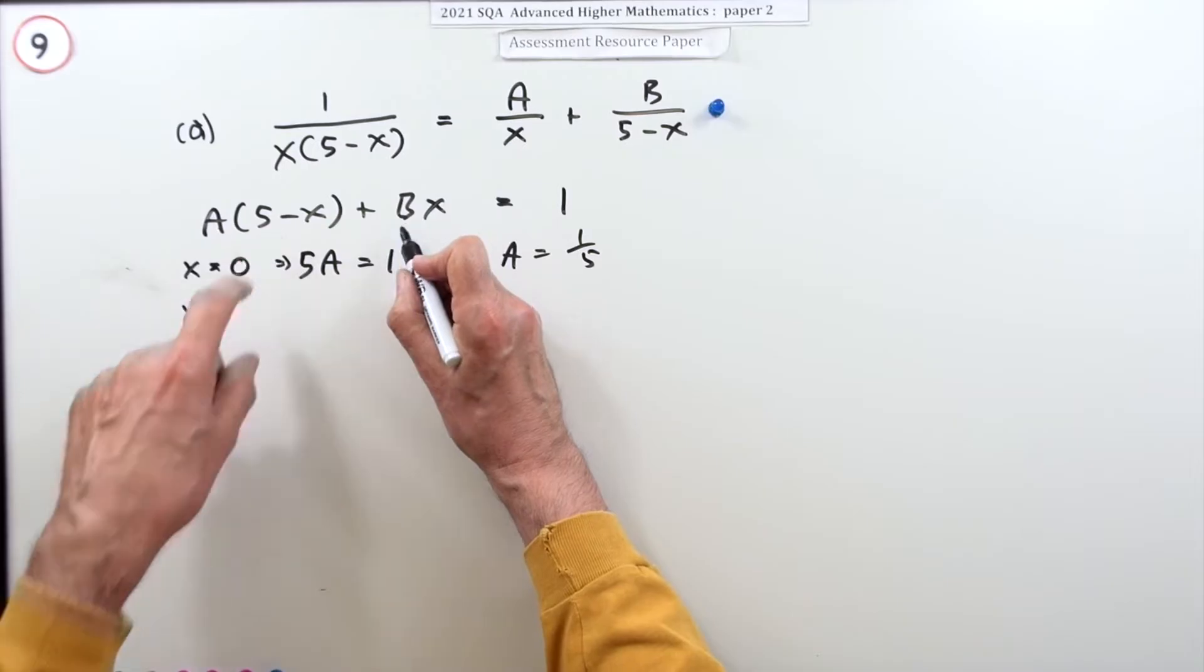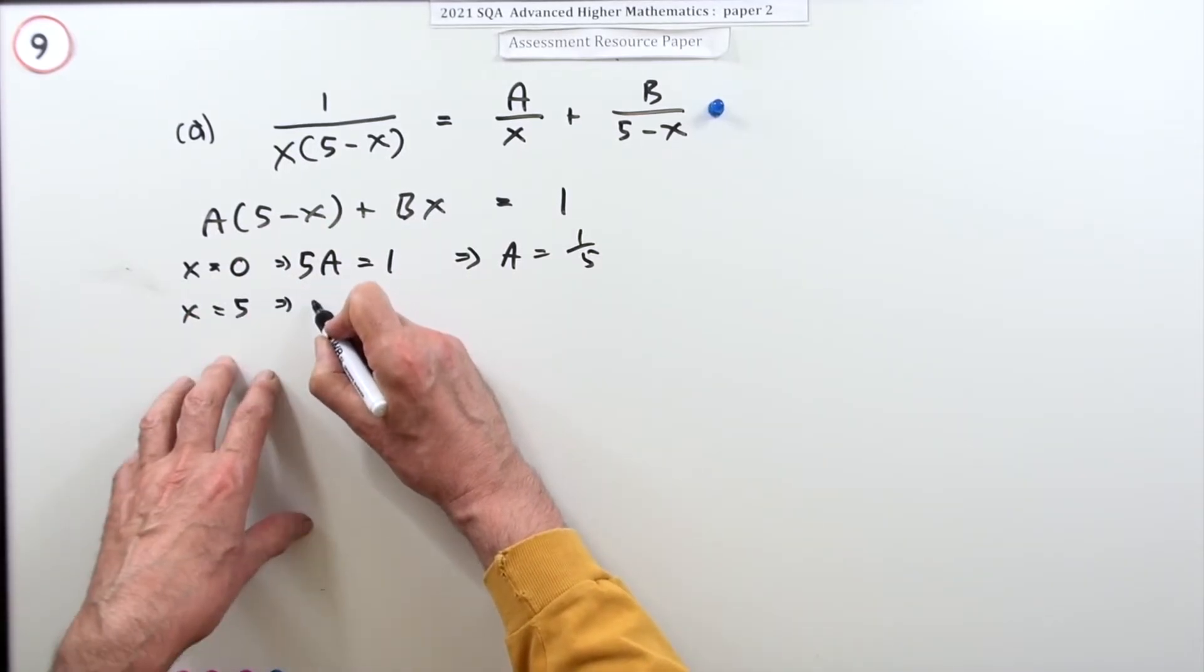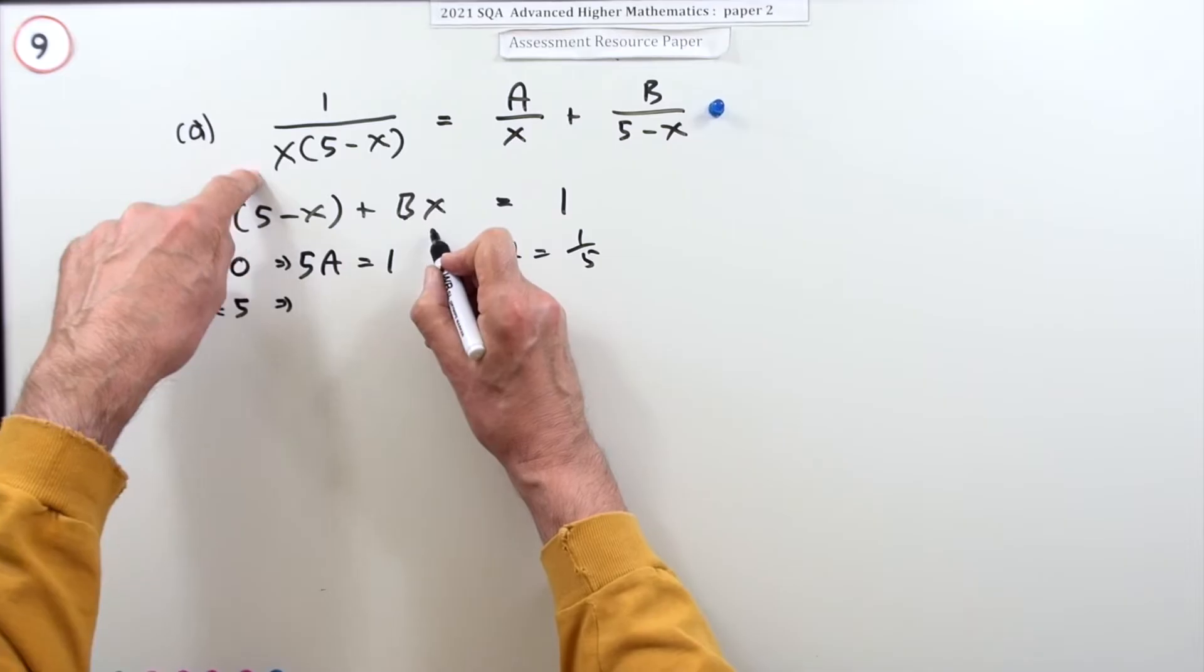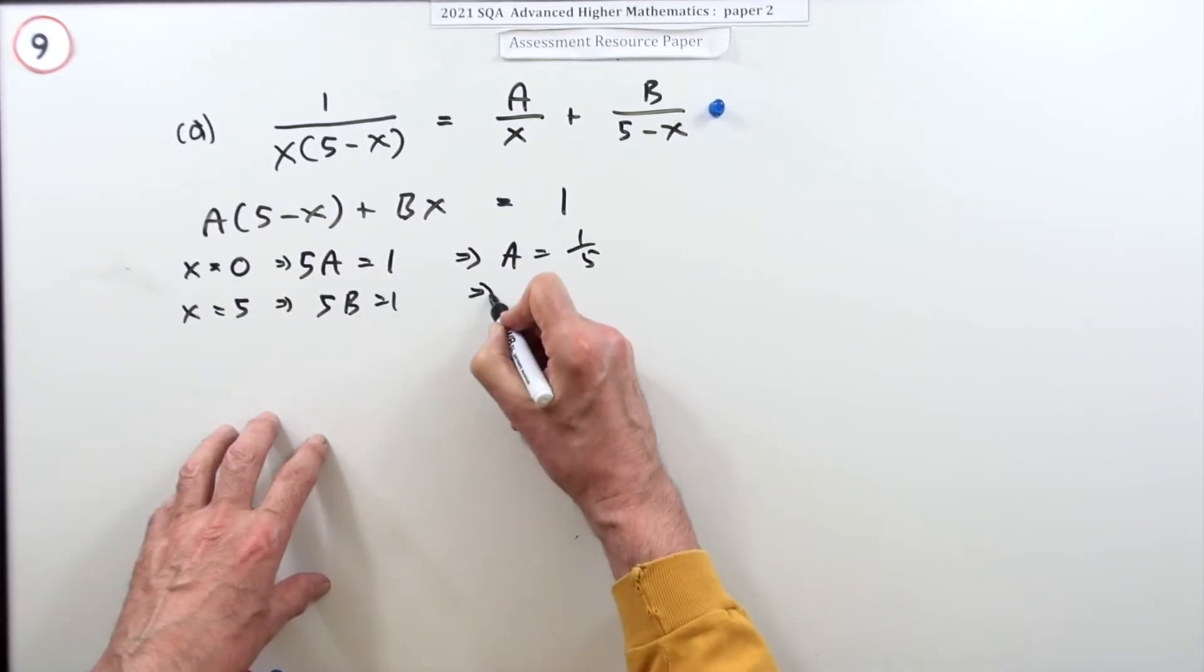Now to get b, I want to knock this out. If you were to make x equal five, that means that you've got that knocked out and now you've got five times the b makes one, so that's also a fifth.